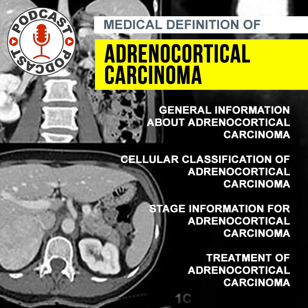Initial evaluation should include careful endocrine studies to reveal any excessive hormone production by the tumor, which can serve as a tumor marker during therapy. Staging should include imaging of the primary site by computed tomography, CT, and/or magnetic resonance imaging of the abdomen.